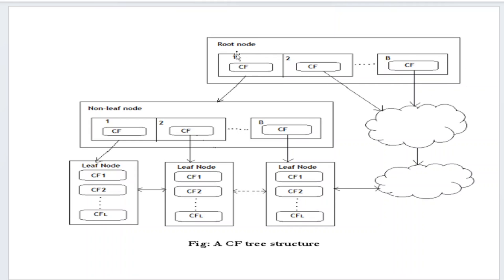Here is an example of the cluster feature tree. The root node holds b number of cluster features. The next level has non-leaf nodes, and below them are leaf nodes containing the cluster features. The summation of all cluster features in a leaf is stored in the parent. This structure follows the same ordering as binary trees and B+ trees.